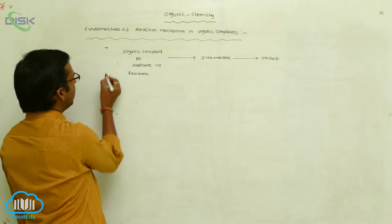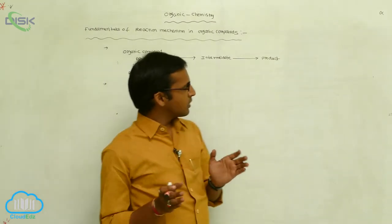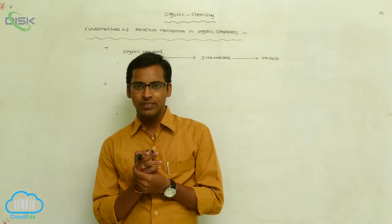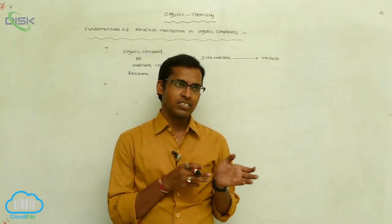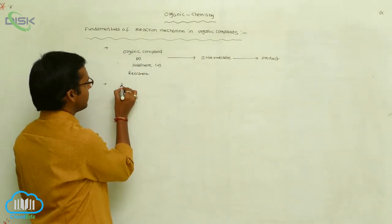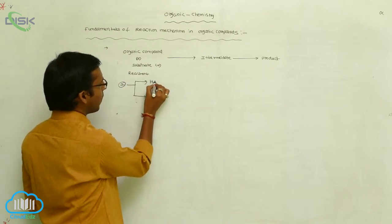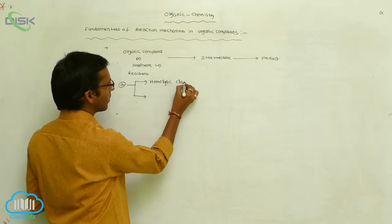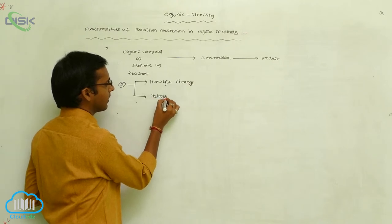In reaction mechanism, the reactant is converted to product. The reactant undergoes bond breakage or bond formation — homolytic cleavage or heterolytic cleavage. Based on fission, these are classified into two types: one is homolytic cleavage and the next one is heterolytic cleavage.